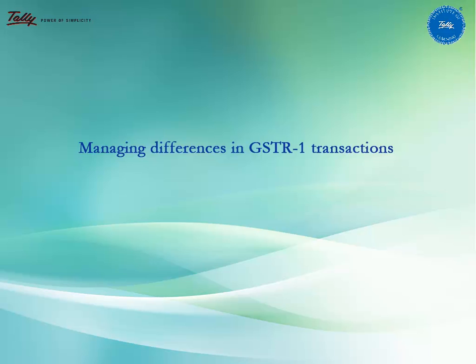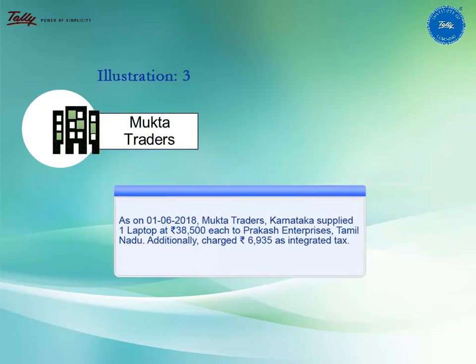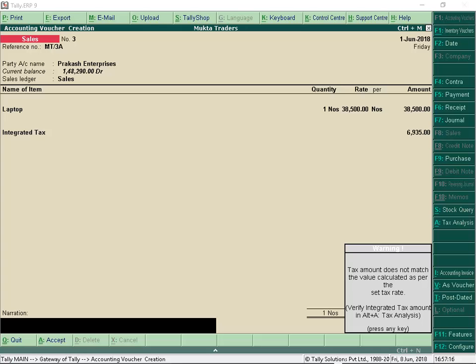The next update is managing differences in GSTR1 transactions. As per the latest changes made by the GST department, the tax amount can be of any value. Earlier, there was a condition that tax amount should be equal to taxable value multiplied by tax rate, which is now removed. Mukta Traders supplied a laptop to Prakash Enterprises and charged Rs 6,935 as integrated tax. Since the integrated tax amount was provided manually, Tally prompts a warning message — press Enter and accept the transaction.